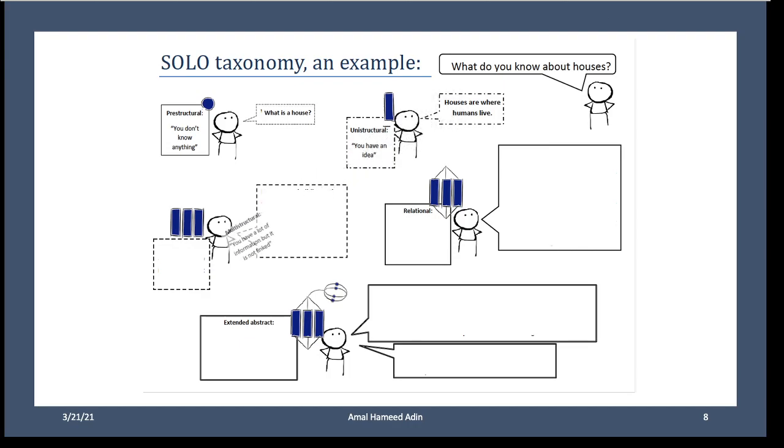He has only one information. What about the multi-structural? He can list, for example, parts of the house. He can say 'Houses are buildings, they are made of walls, a roof, doors and windows,' but there are no connection between the parts of the house and the benefits.